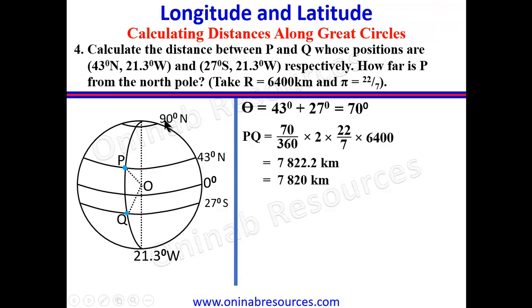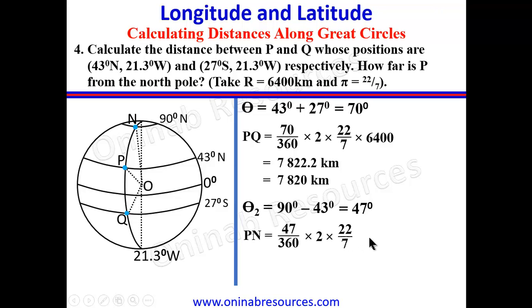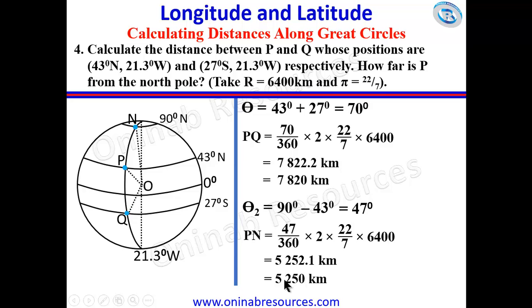For the second part — how far is P from the north pole? The north pole is 90 degrees north; we call this point N. PN also forms a sector along a great circle, so we apply the same formula. Both are in the north so we subtract: theta₂ = 90 − 43 = 47 degrees. Thus PN = (47/360) × 2 × (22/7) × 6400 = 5252.1 kilometers, which to three significant figures is 5250 kilometers — the distance from P to the north pole.